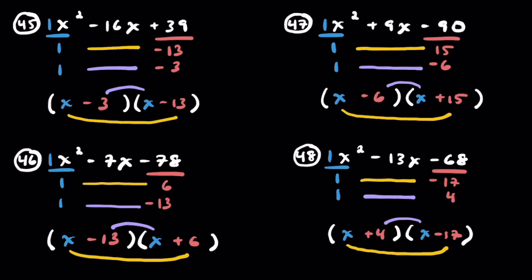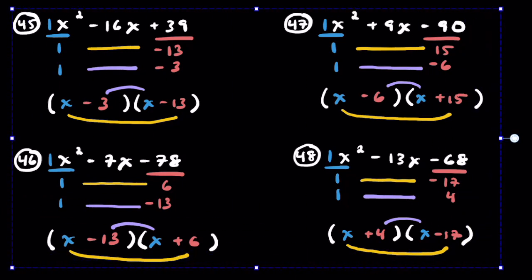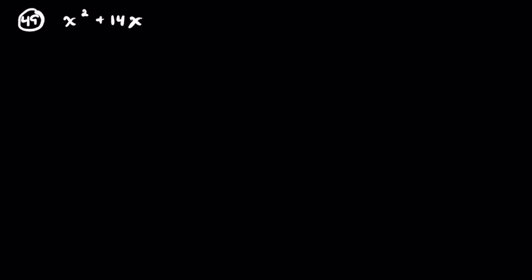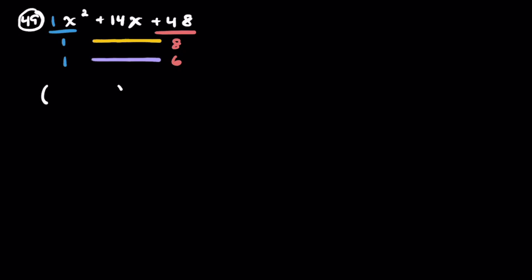Problem 49: x squared plus 14x plus 48. One and 1. For positive 48 and positive 14, let's go with 8 and 6 — everything's positive, back to the good old days of the first 10 problems. Answer: (x + 8)(x + 6). Once we get to the second 50 problems, you'll miss these ones where the x squared had a coefficient of 1, because once it changes you have to do a little bit more thinking.